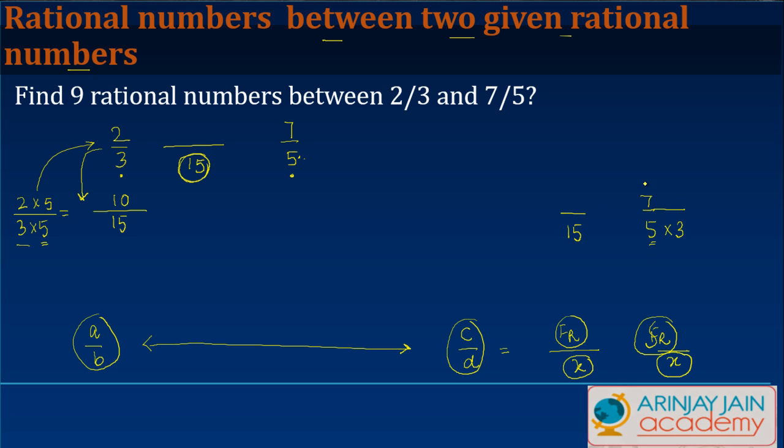Same principle I apply over here - I have multiplied the denominator by 3, so I multiply the numerator by 3 as well, and I get 21/15. If you notice, 2/3 is equal to 10/15 and 7/5 is equal to 21/15. Now since I've got the denominator common in both of these...